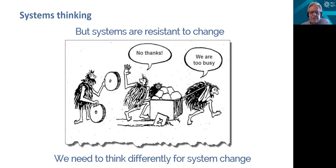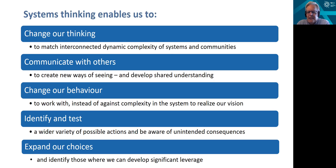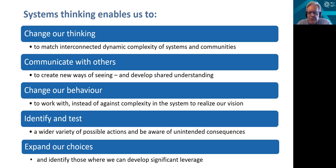So we really need to think differently when we talk about system change. Systems thinking is really a language, a discipline — it's many things that come together to help us change the way we think and the way we approach things. We've all been trained in classical, reductionist ways to take things apart and understand how they operate. That's not the best way to do systems thinking. We need to change our thinking to deal with the complexity of systems — particularly health systems, but also communities and society. That requires an ability to communicate with a common language and share new ways of understanding what's going on in the system. We have to change our behavior as part of the system, because it's system behavior that ultimately we want to help manage.